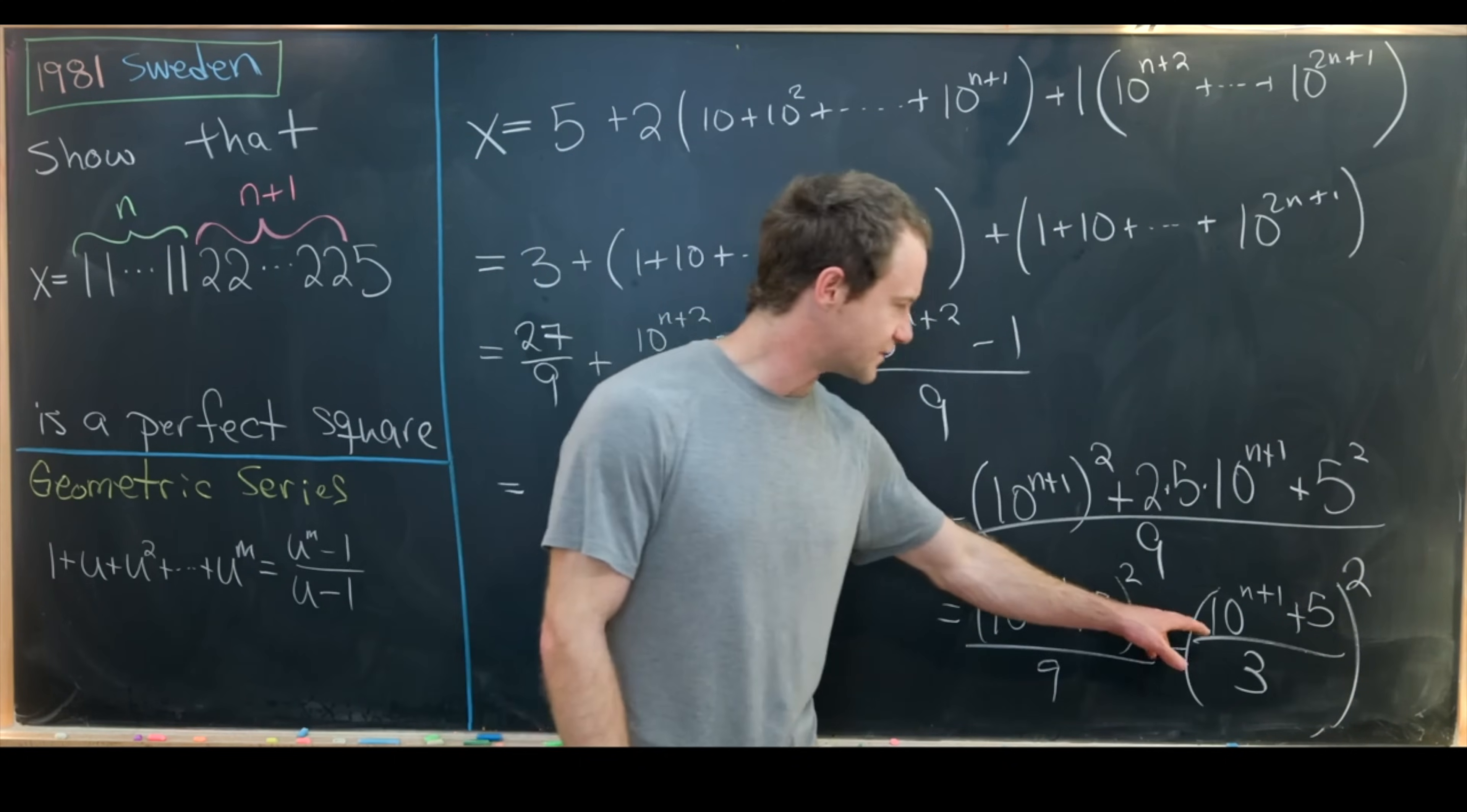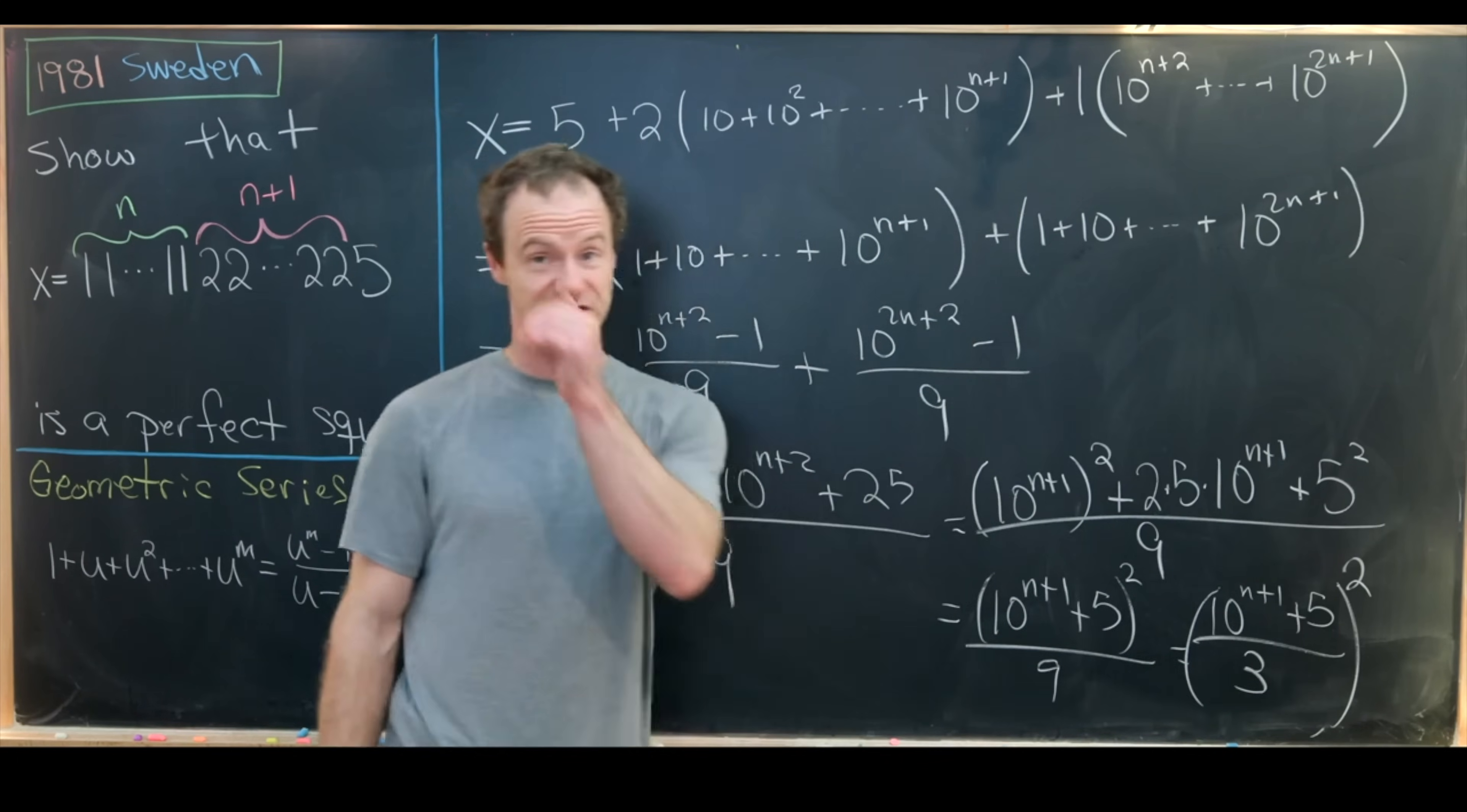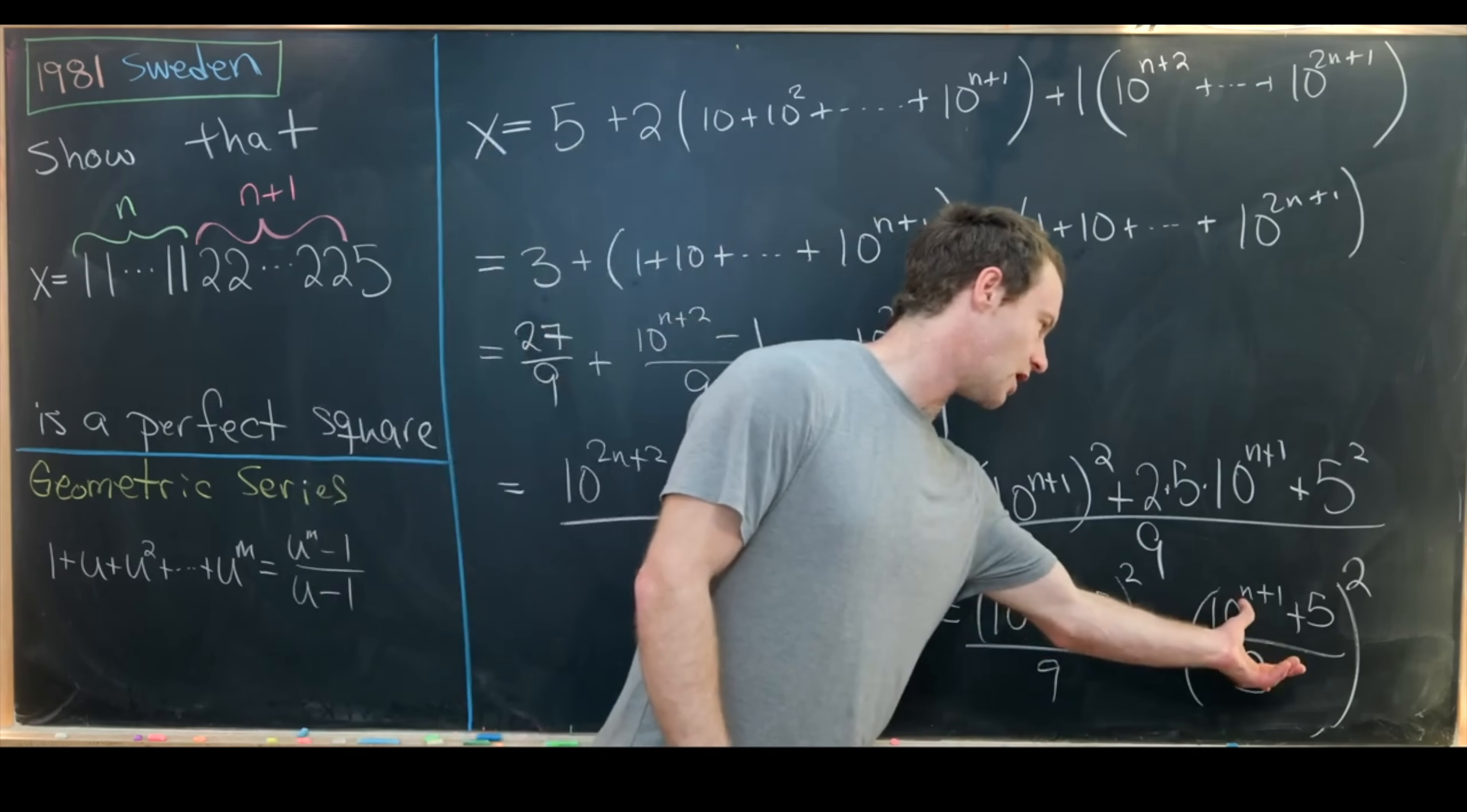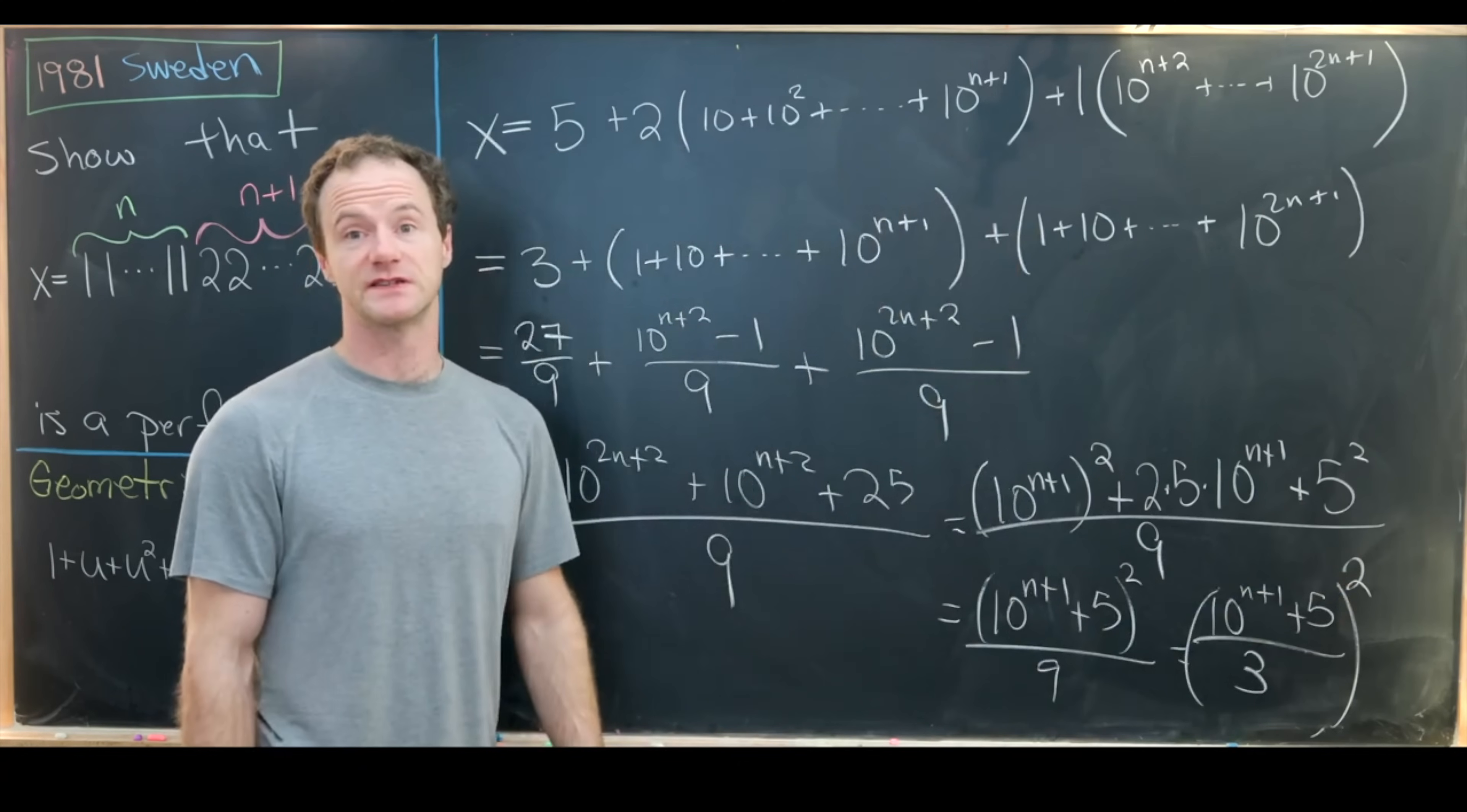And then there are several reasons we know that this is a whole number, but let's just notice the numerator here has a digit sum of 6, which is divisible by 3. So all of the stuff inside of this perfect square is most definitely a whole number. And that's a good place to stop.